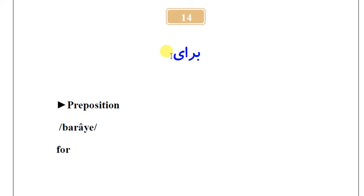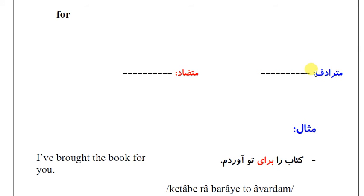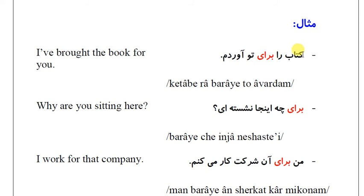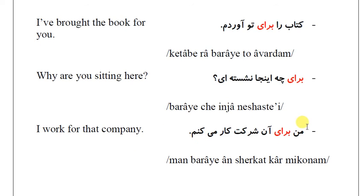برای — synonyms (مترادف) and antonyms (متضاد). Example sentences: کتاب را برای تو آوردم — I brought the book for you. برای چه اینجا نشسته‌ای؟ — Why are you sitting here? من برای آن شرکت کار می‌کنم — I work for that company.